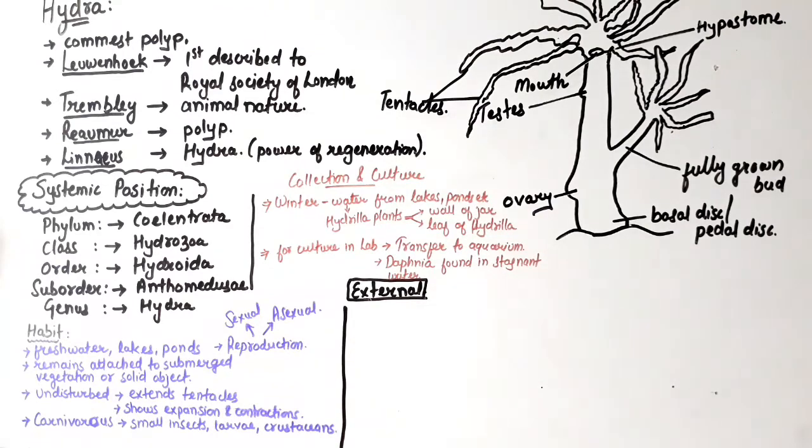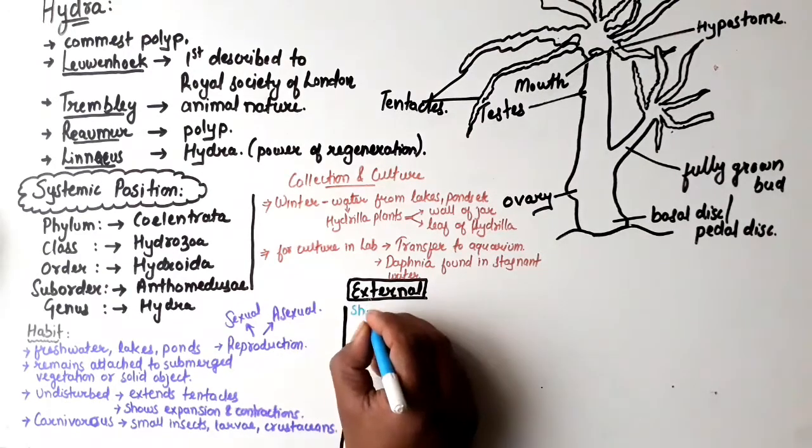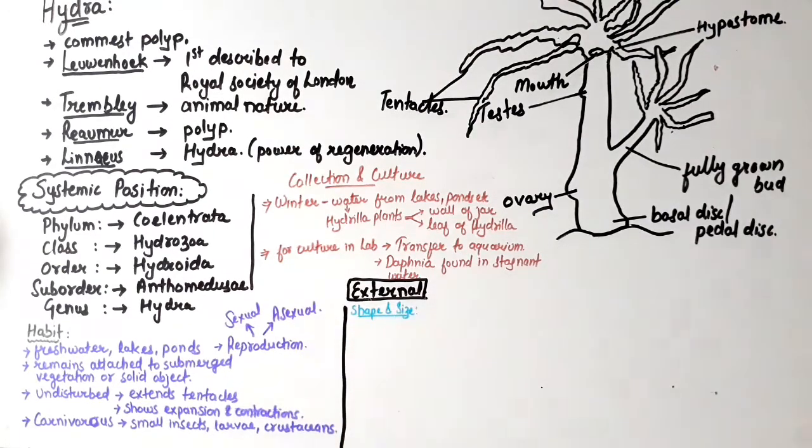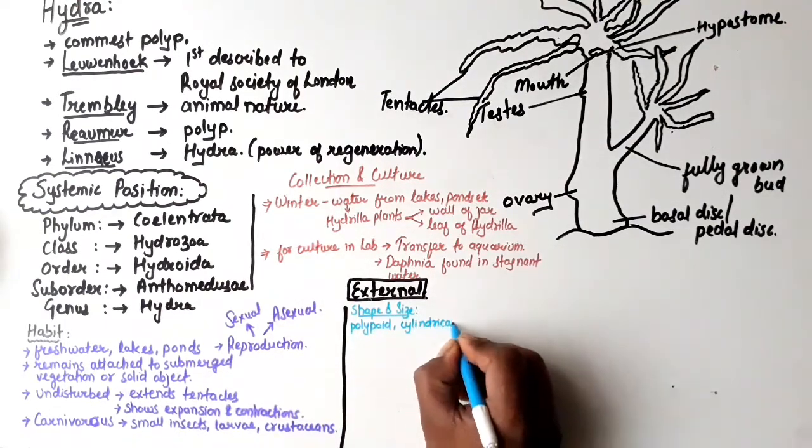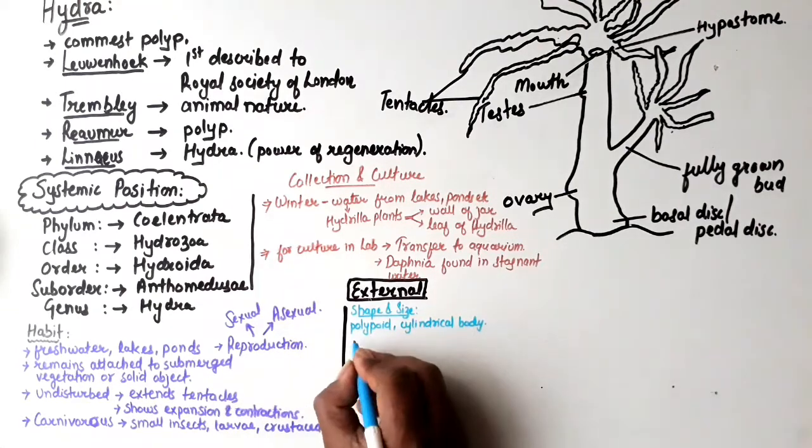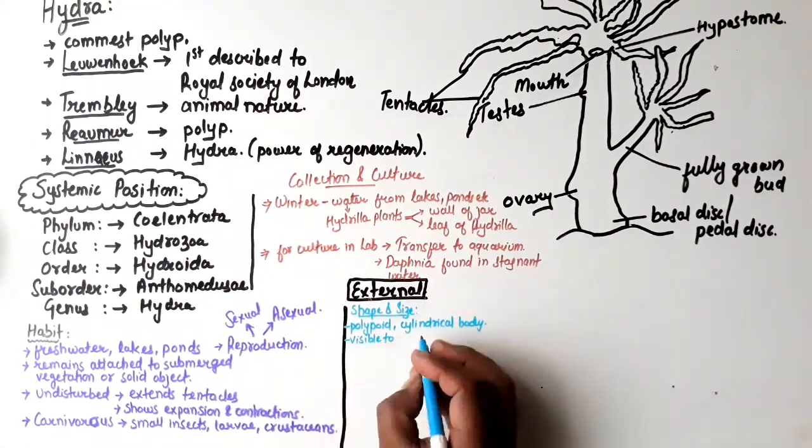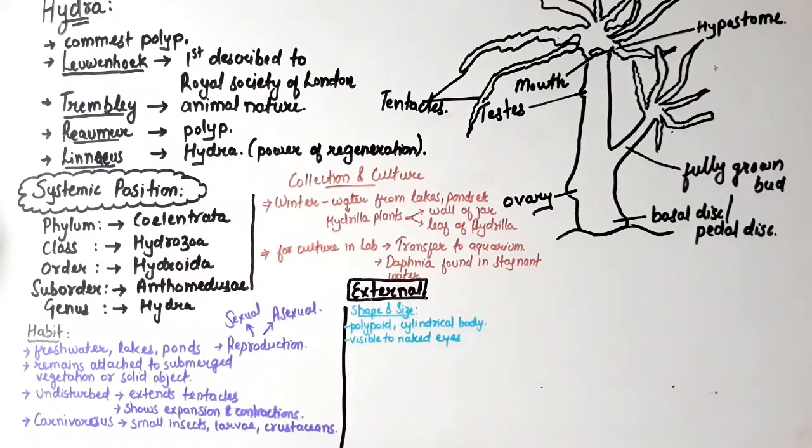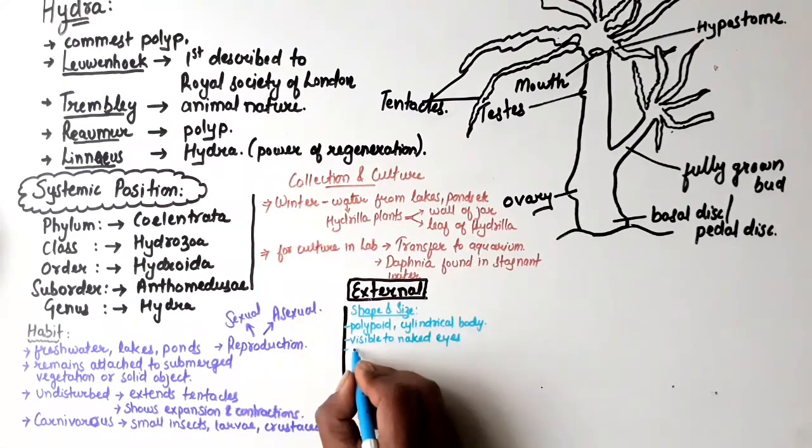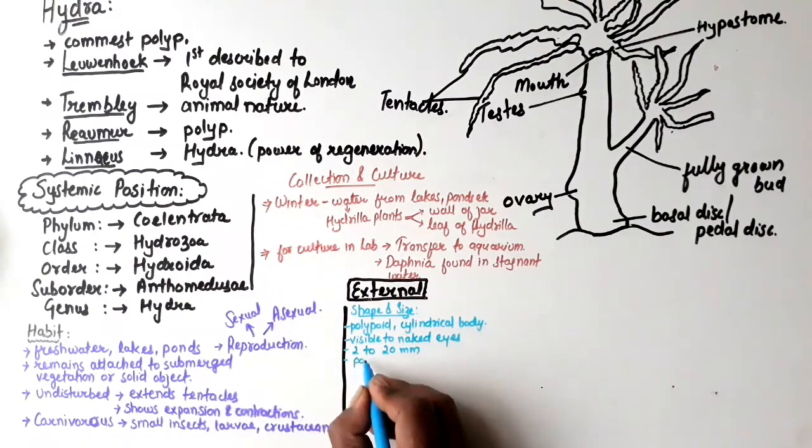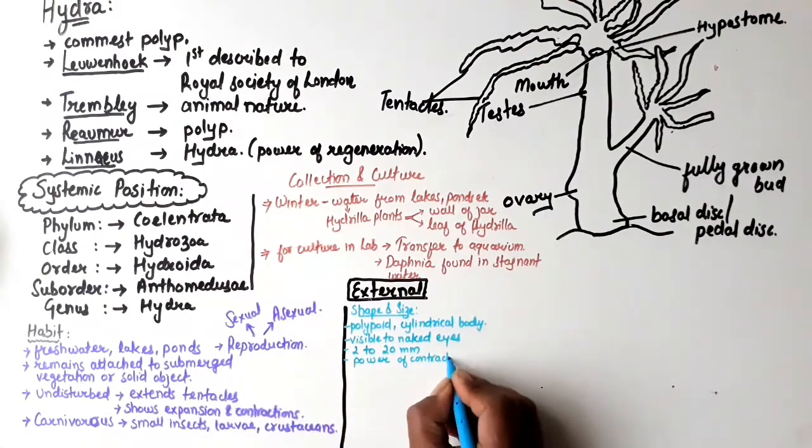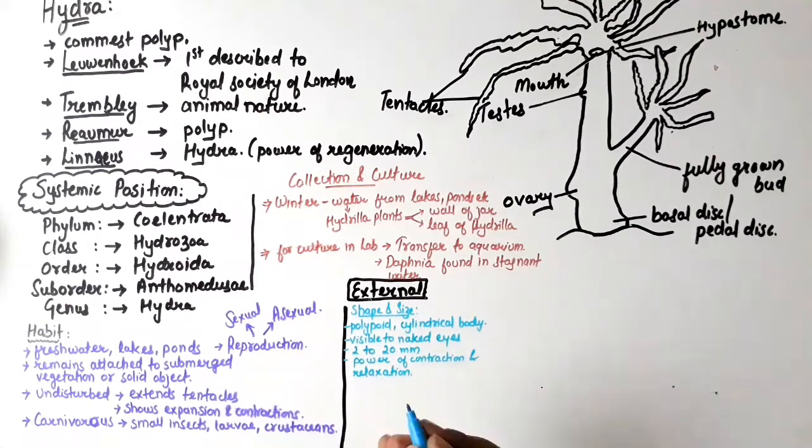Now we will understand the external structure of Hydra. First, let's discuss the shape and size. Hydra polyp has a cylindrical body, easily visible to the naked eye. When extended, its length ranges from 2 to 20 mm. This size variation is due to its exceptional capacity to contract and relax.